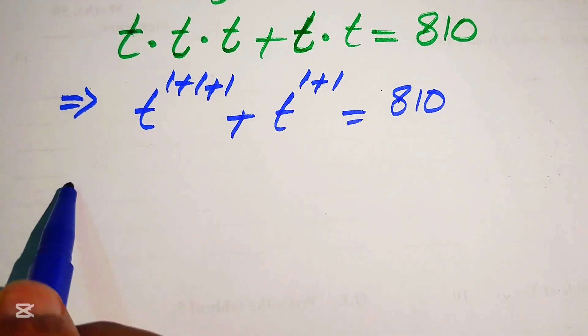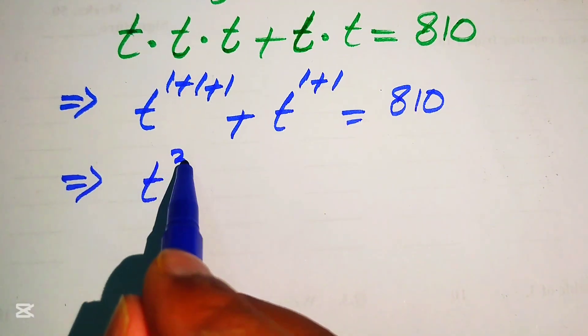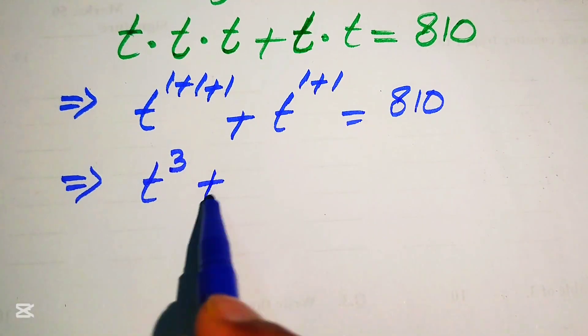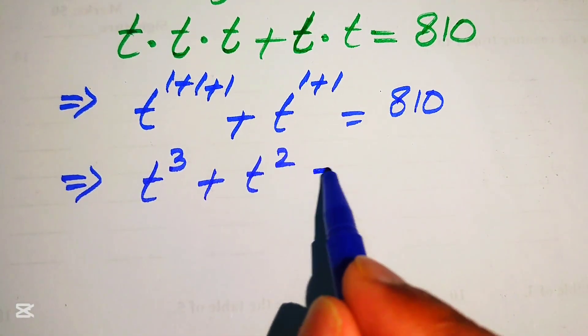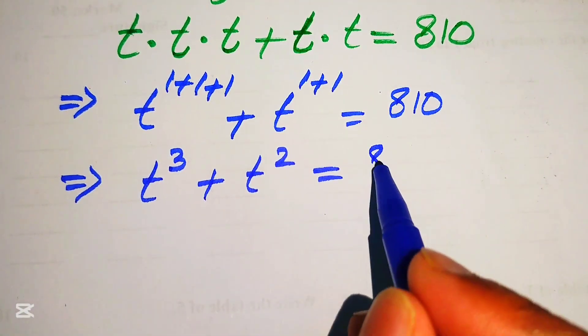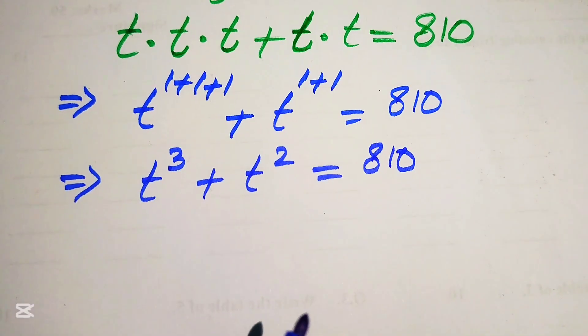Now we get t to the power of 3, plus t squared, equals to 810.